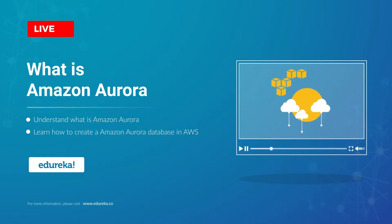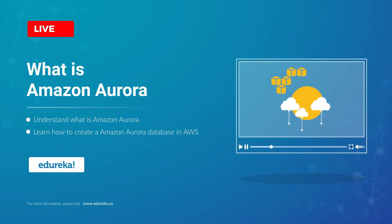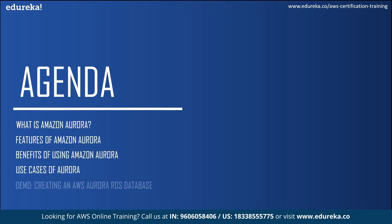In today's session, we're going to talk about Amazon Aurora. First, we will understand what exactly Amazon Aurora is and talk about some of its prominent features. Next, we'll see some of the benefits of using Amazon Aurora and some of its use cases. Finally, we will move on to a demo where we will create an Amazon Aurora RDS database.